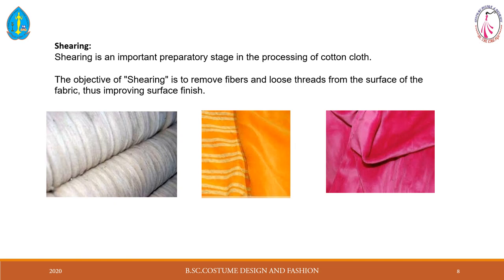Shearing is an important preparation stage in the processing of cotton cloth. The objective of shearing is to remove fibers and loose threads from the surface of the fabric, improving the surface finish. Loose fibers and threads are removed to give a smooth finish. That is the main purpose of shearing.